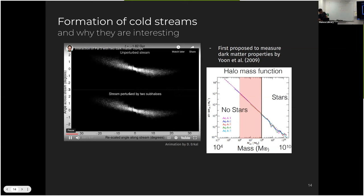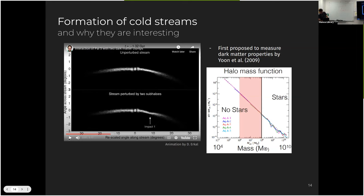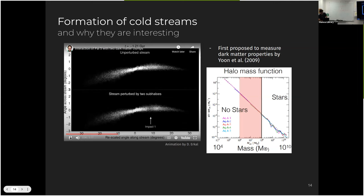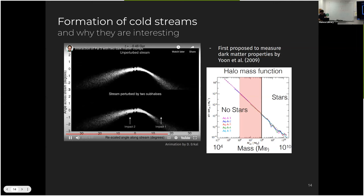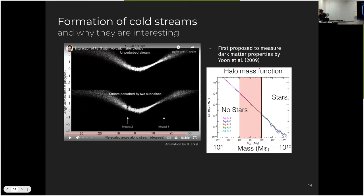So as I play this video, you see the stream just evolving nicely, and then there's an impact there. You can already see that the impact produces a kink on the stream. And as it evolves, it will produce an under-density, which you can kind of see here, compared to the top panel. And there will be a second impact right now. And as it evolves, it also forms a kink, and then an under-density there.